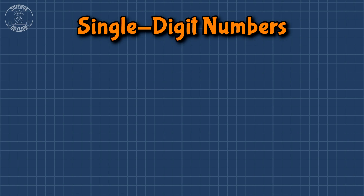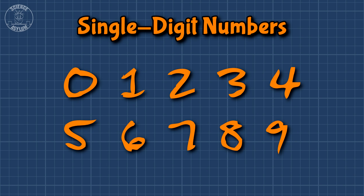Mathematically, it just means we have 10 single digit numbers: zero, one, two, three, four, five, six, seven, eight, and nine.